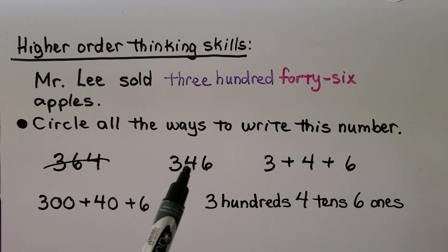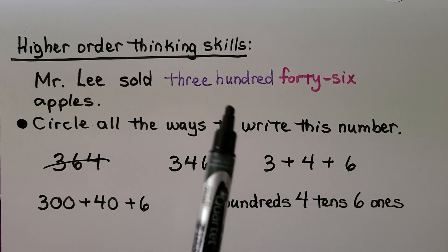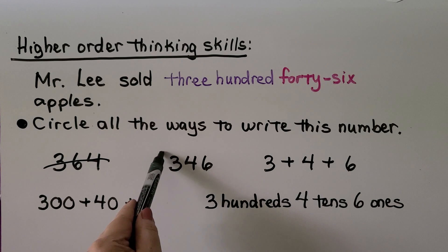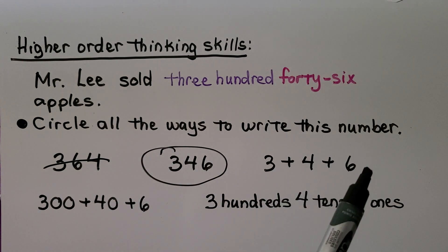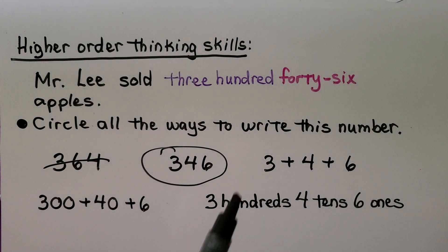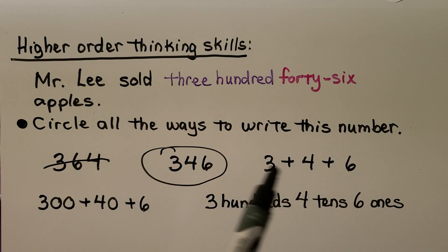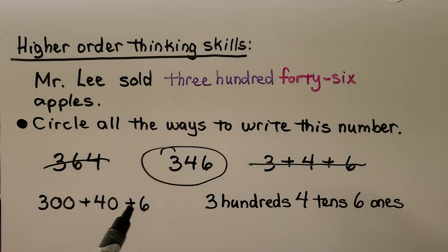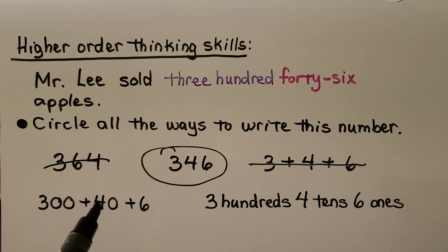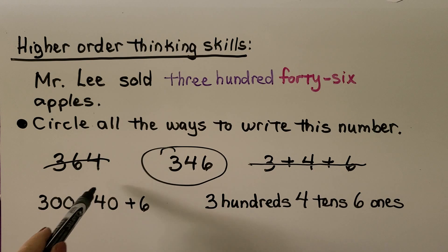'Three hundred forty-six' in word form — yes, that's one of the ways. Can we write it as three plus four plus six? No — don't confuse that with the riddle we just did. How about three hundred plus forty plus six? Yes — we have three hundreds plus four tens plus six ones — that works.